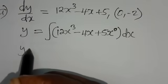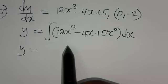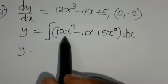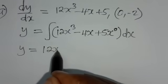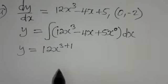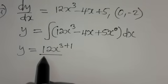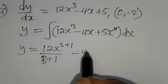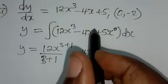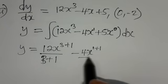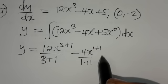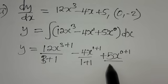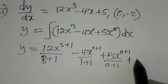To integrate a function, you add 1 to the power and then divide by the new power. So we are going to have: 12x to the power (3+1) divided by (3+1), minus 4x to the power (1+1) divided by (1+1), plus 5x to the power (0+1) divided by (0+1), plus the constant C.